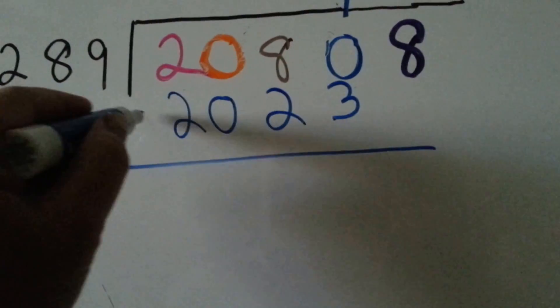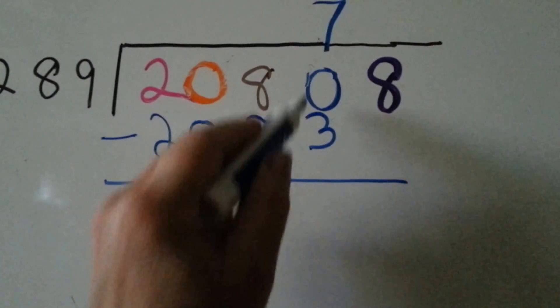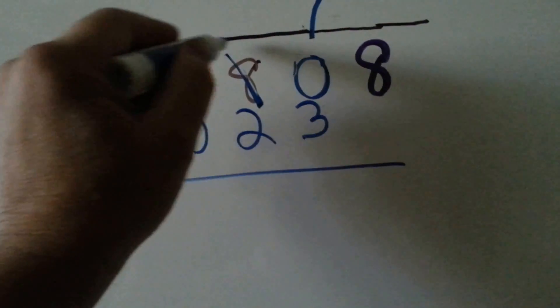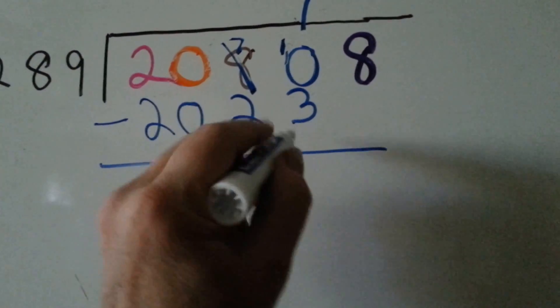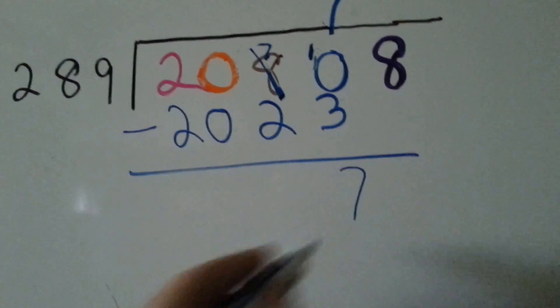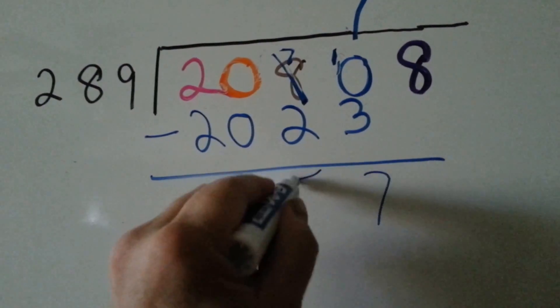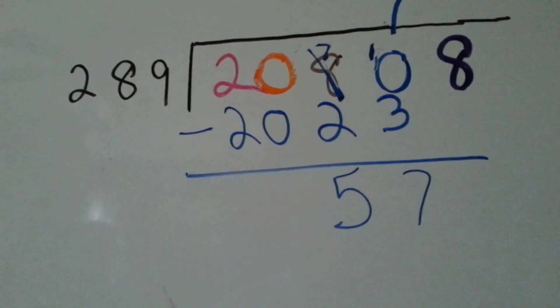We're going to do our subtraction. 3 from zero can't do it. So this is going to become a 7 and that's going to become a 10. 10 take away 3 is 7. 7 take away 2 is 5. And 20 take away 20 is 0.